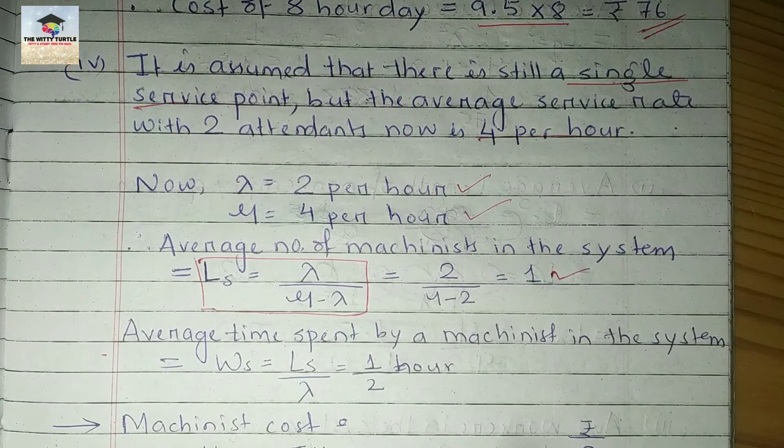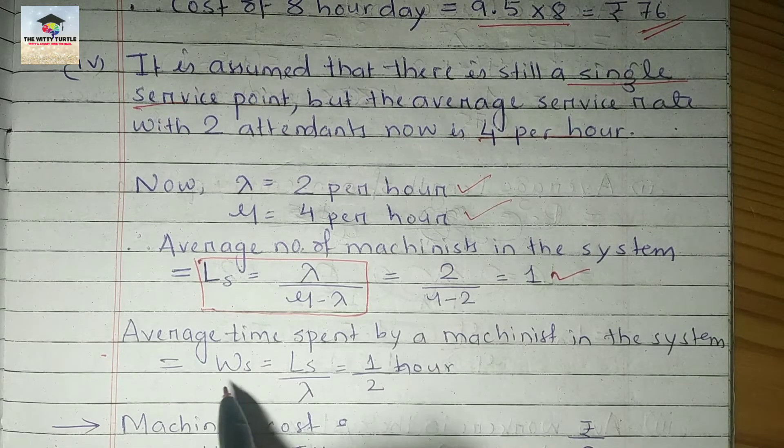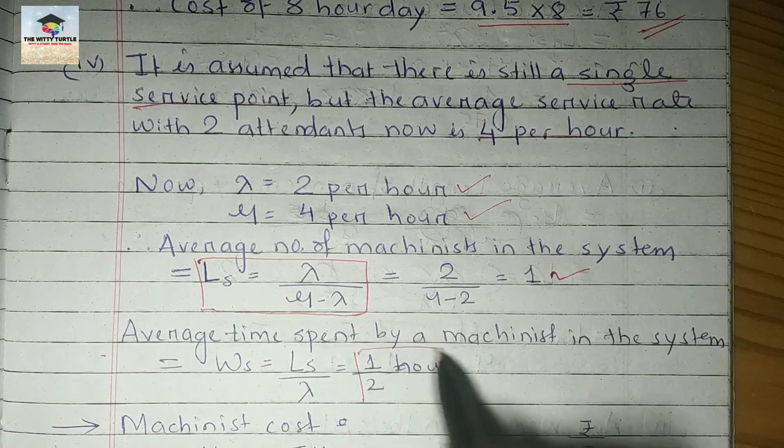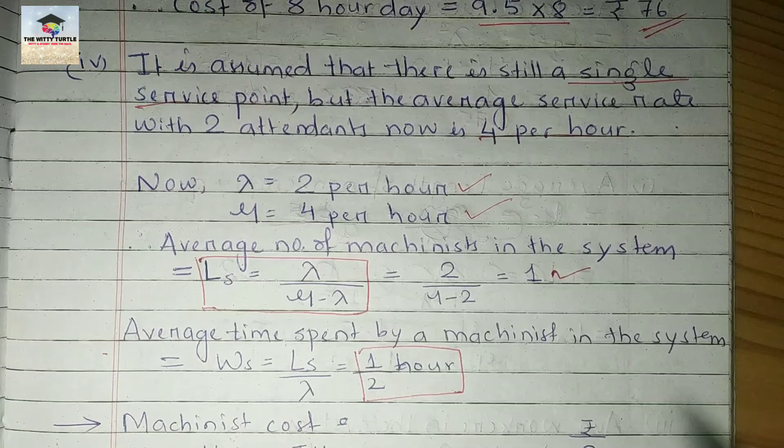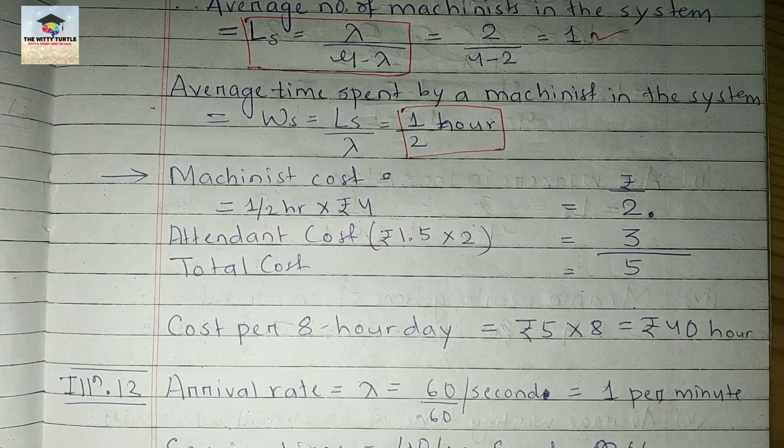Then the average time spent by a machinist in the system will be, the formula is Ws equals Ls by lambda, that is half an hour, which is your 30 minutes. So now we can calculate the cost per 8-hour day.